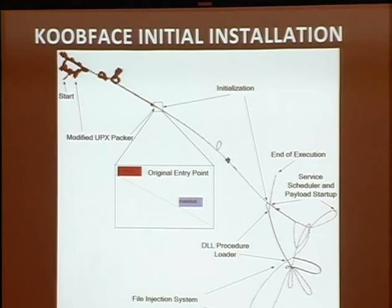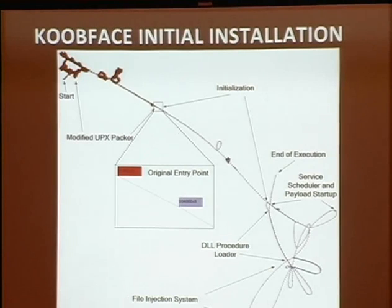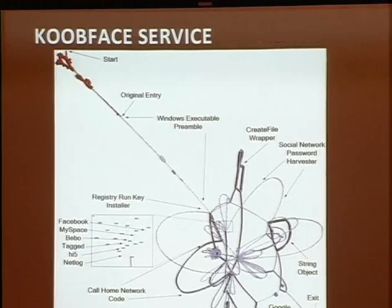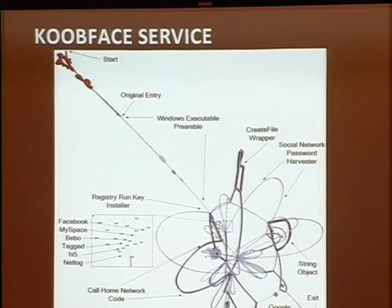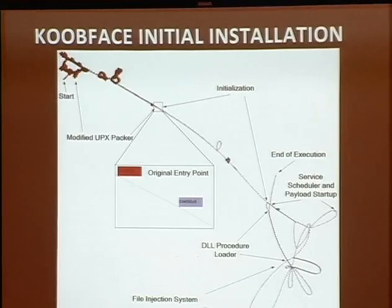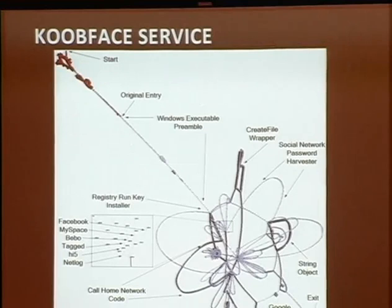We've got the initialization. Now we want to start finding various areas of the executable. Each one of these long running strands represents either a function or an area of functionality. There's an interface where you can right-click and find it inside of IDA. Cubeface behaves a lot differently when actually installed and started as a service - it has a completely different execution and behavior. We've got the initial UPX packer, the original entry point, the executable preamble with initialization code, and then things get a lot more complicated versus the previous example.